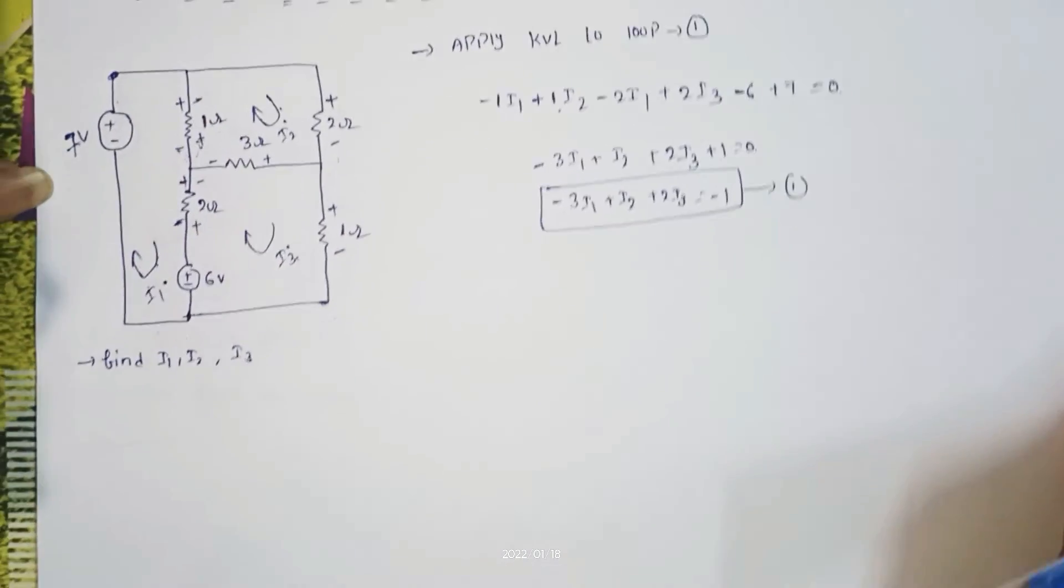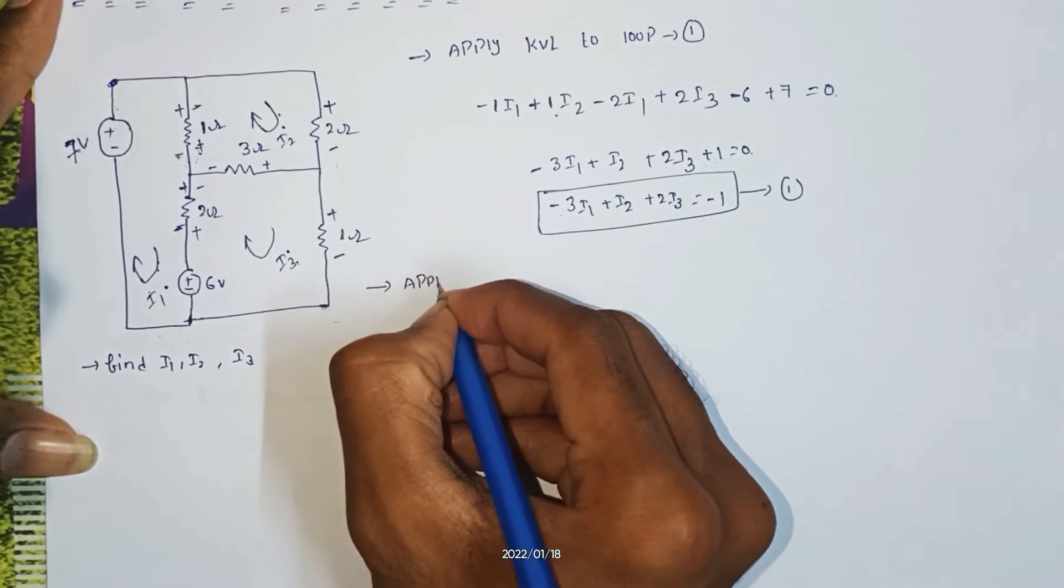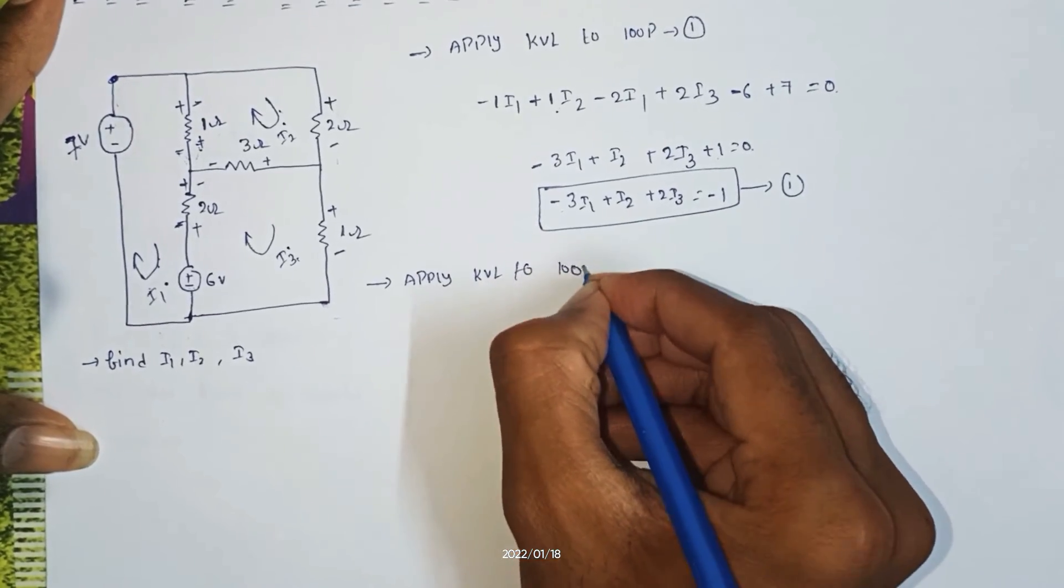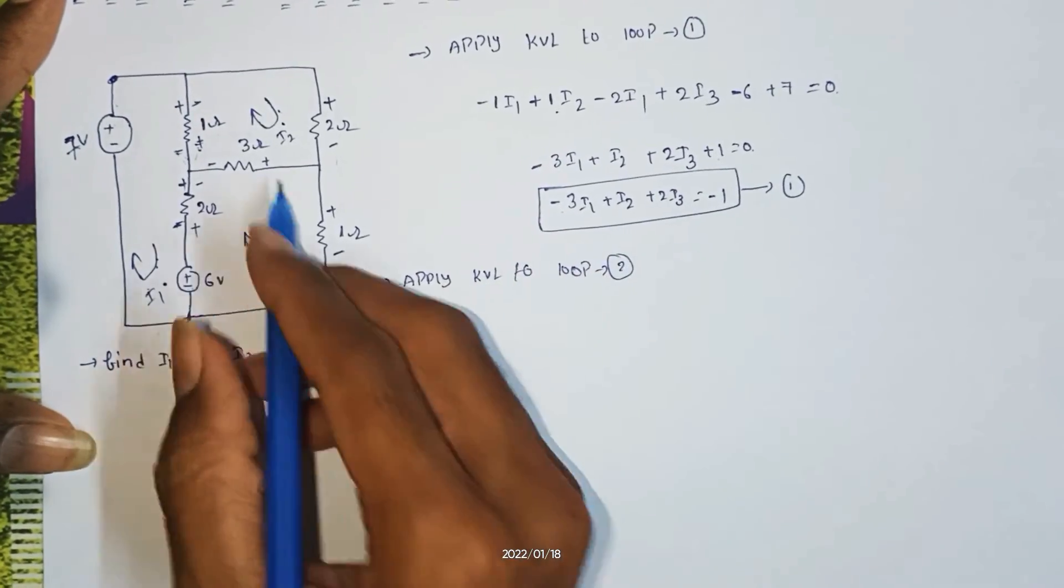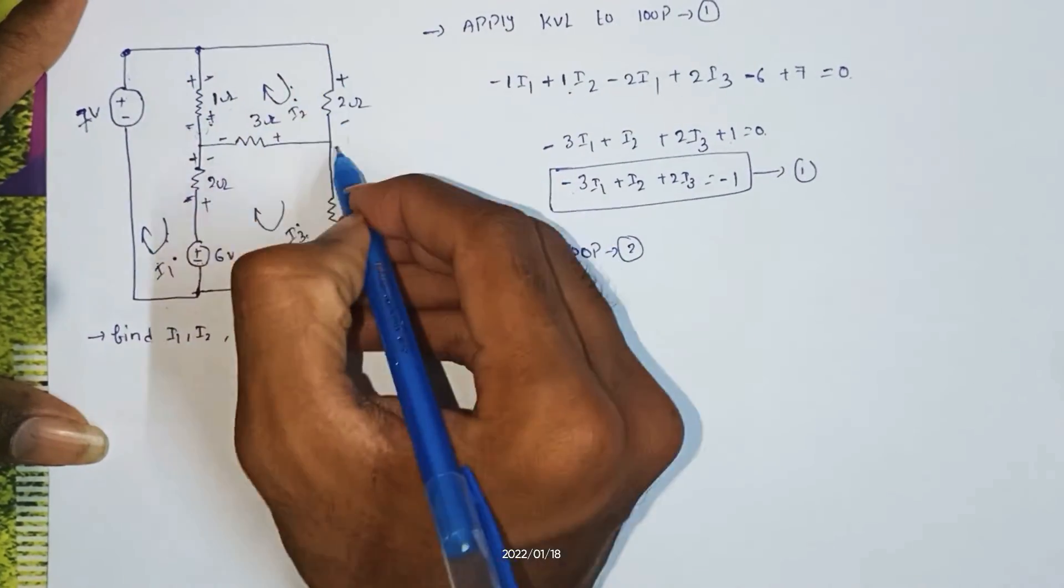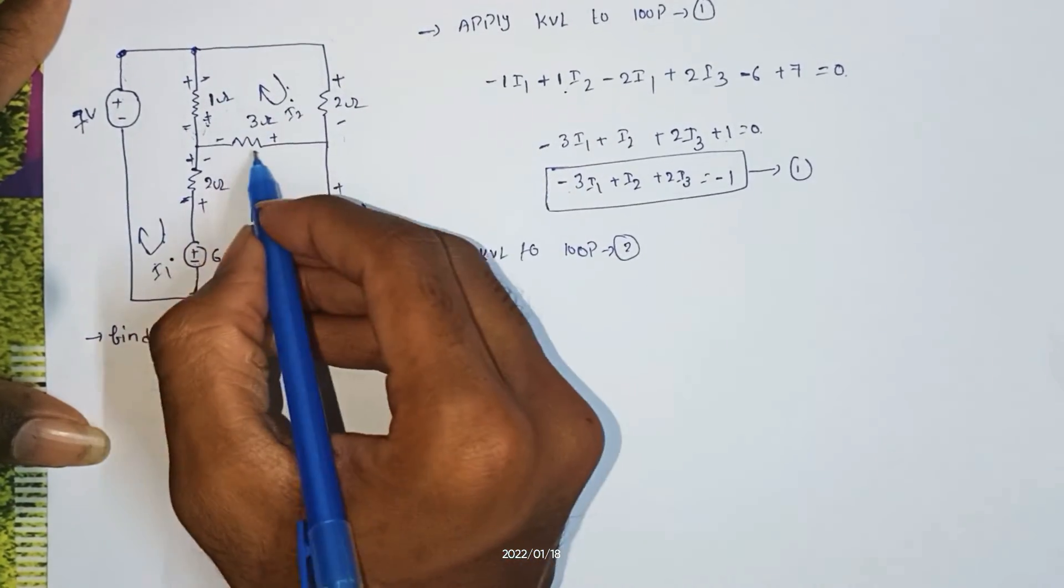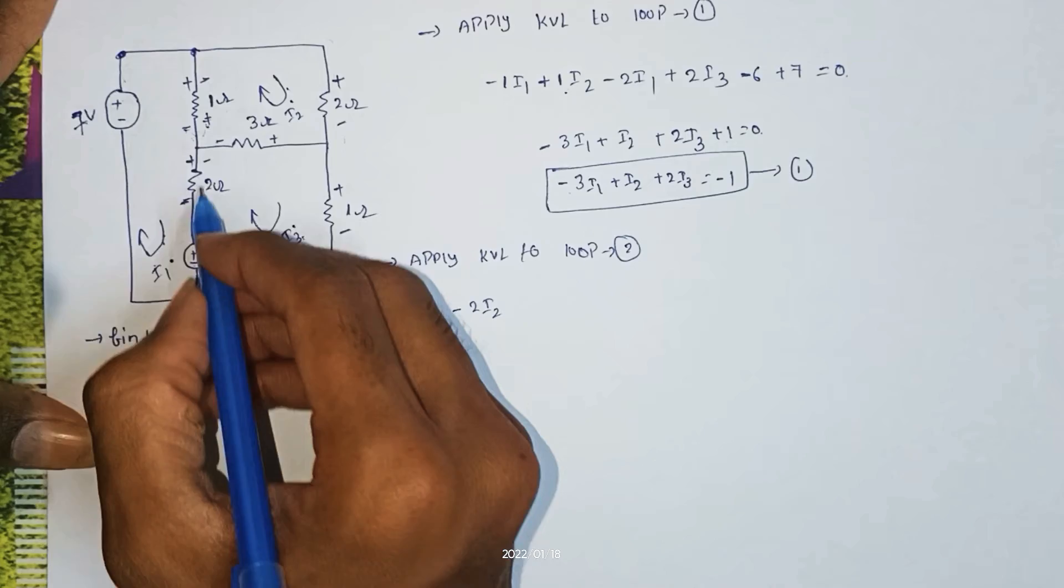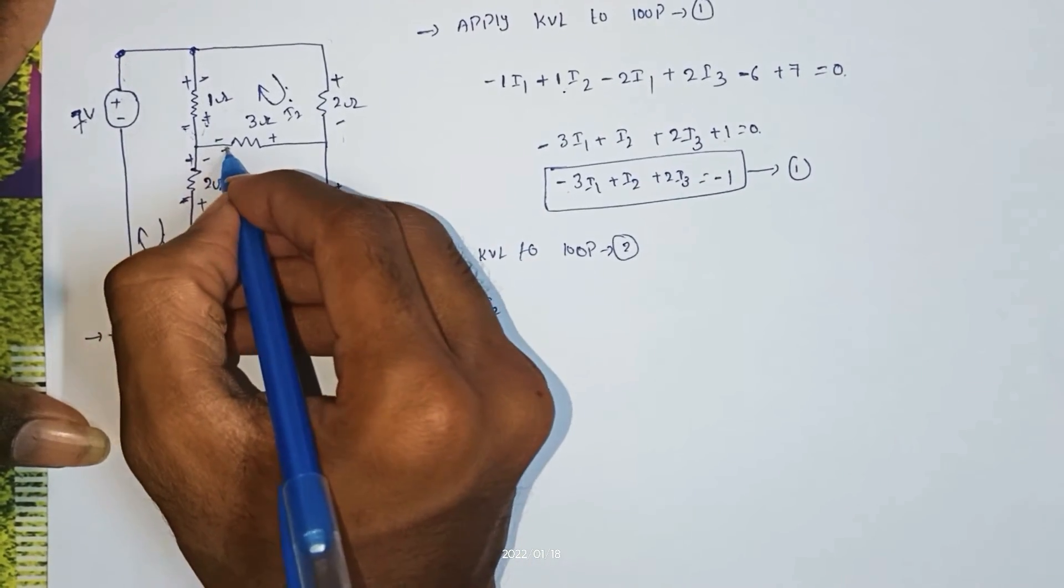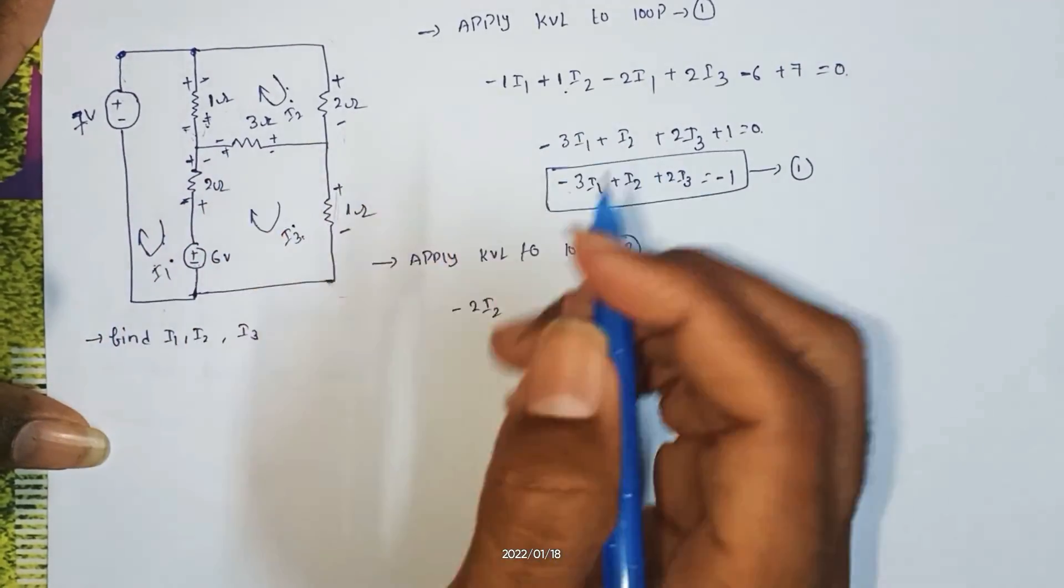Apply KVL to loop 2. So loop 2, plus minus, plus minus, plus minus.